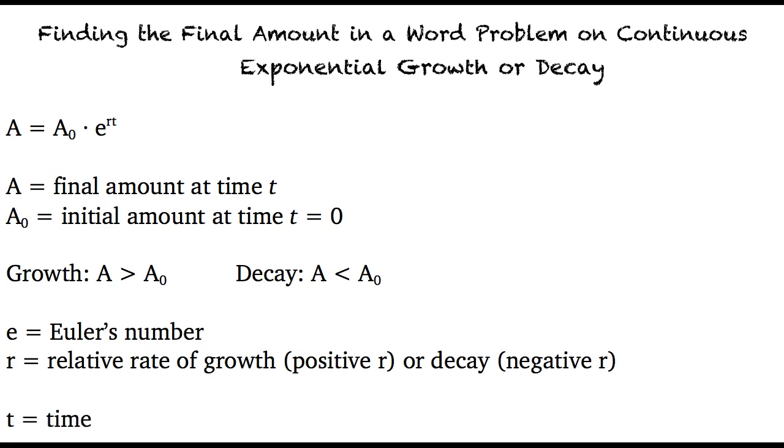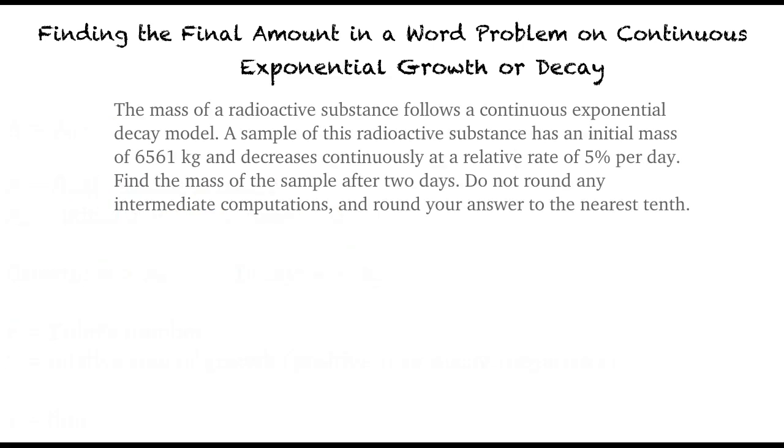I think I'm starting to understand this equation, but can we do a quick example? Sure. The mass of a radioactive substance follows a continuous exponential decay model. A sample of this radioactive substance has an initial mass of 6,561 kilograms and decreases continuously at a relative rate of 5% per day. Find the mass of the sample after two days. Do not round any intermediate computations and round your answer to the nearest tenth.